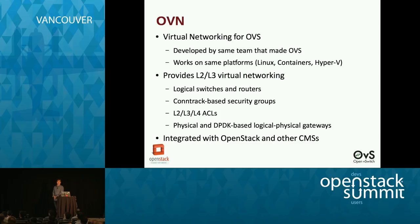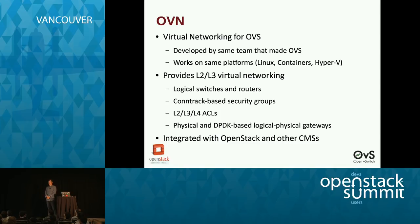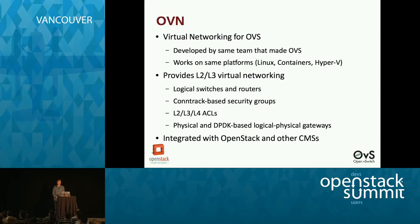I want to mention a new project: OVN, for Open Virtual Network. This is a new project that will provide virtual networking for OVS, made by the same team, designed to work on Linux, Hyper-V, and containers. OVN will have support for logical switches and routers, ACLs, and software and hardware-based logical-to-physical gateways. Most relevant to this group: from the beginning, OVN uses a new connection tracking-based model to implement security groups, which will have much better performance and security than what's currently available. It works with OpenStack as well as other CMSs.